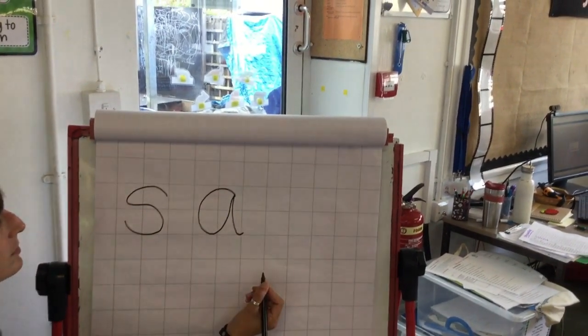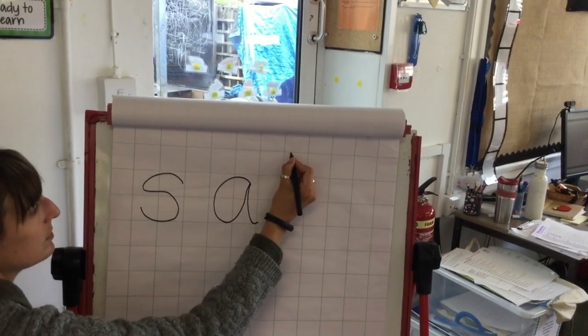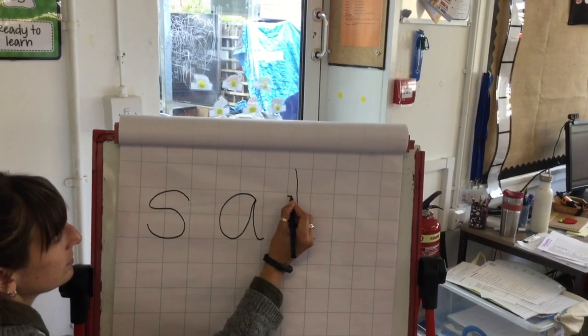The next sound we've learnt is T. We go down the tower and across the tower.